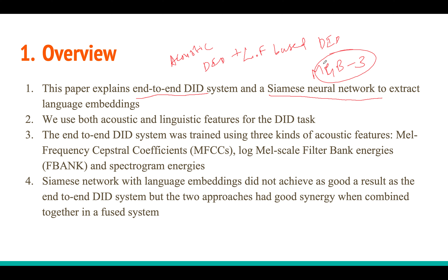The MGB3 challenge is a dialect identification challenge for Arabic dialects. As I said, they use both acoustic and linguistic features. For the end-to-end system, the acoustic features — which could be MFCC, log-mel filterbank (LMF) features, or spectrogram energies — go in as input and the model predicts which of the five dialect classes the audio belongs to.